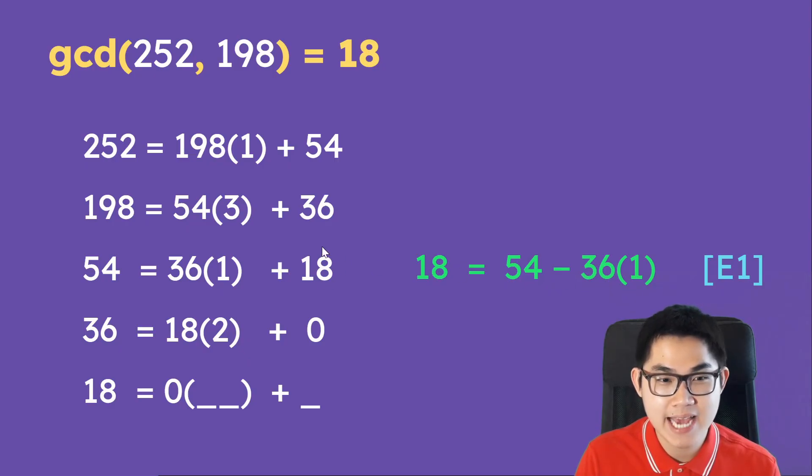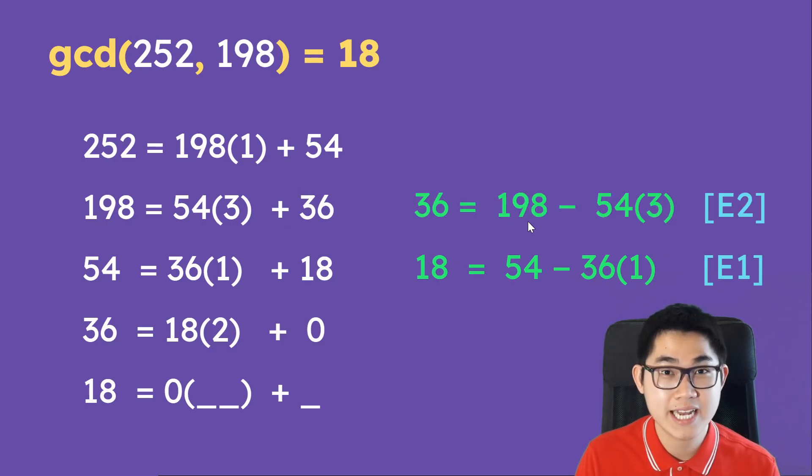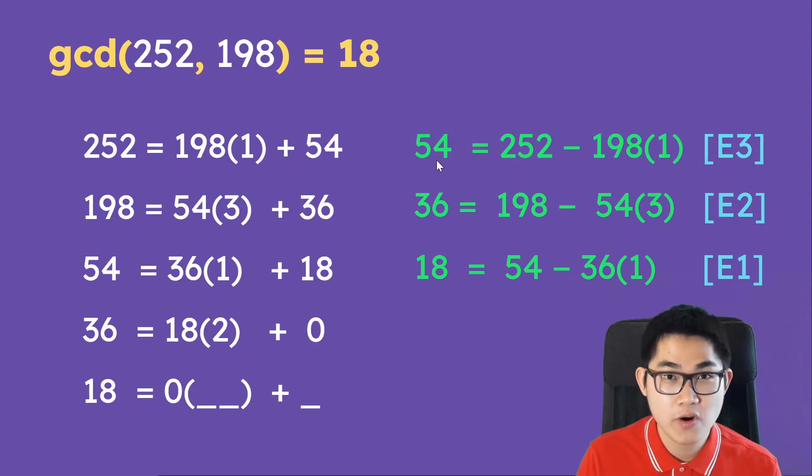So we just keep the 18. We throw everything else to the other side. So we have 18 is equal to 54 minus 36 times 1. Pretty simple so far. And this is called equation 1. We do the same thing with this one. So we have 36 is equal to 198 minus 54 times 3. This is equation number 2. And then we have 54 is equal to 252 minus 198 times 1. And this is equation number 3.